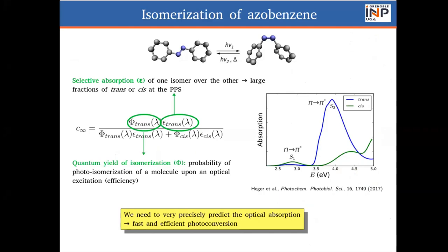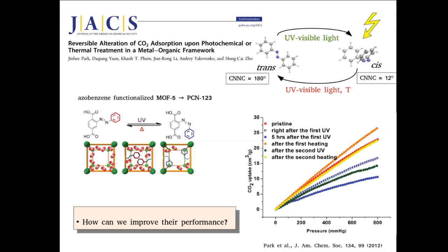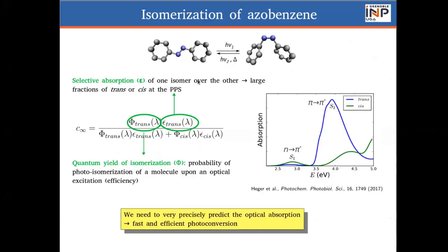So it is essential now to understand how we can increase the photoconversion efficiency, the number of molecules that photoisomerize from trans to cis. This is given by the composition of the photostationary state of trans and cis. This composition depends on the absorbance and on the quantum yield of isomerization. Because the quantum yield of isomerization, which is the probability upon excitation at a given wavelength to isomerize, is very similar in the different cases, what changes dramatically is the absorbance.